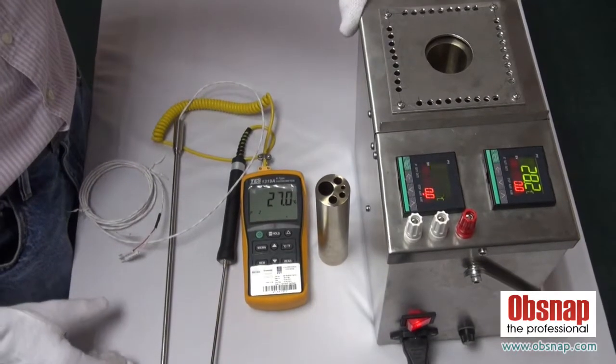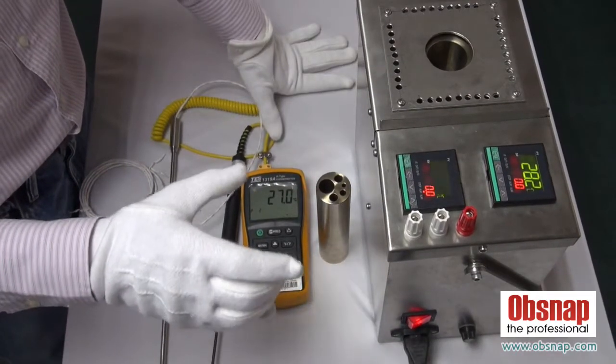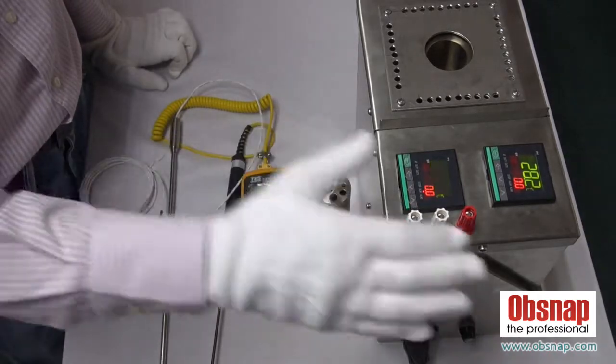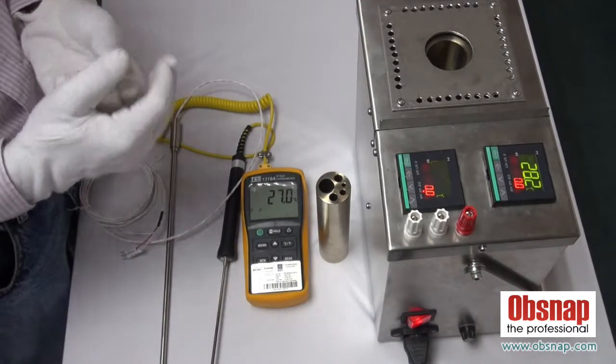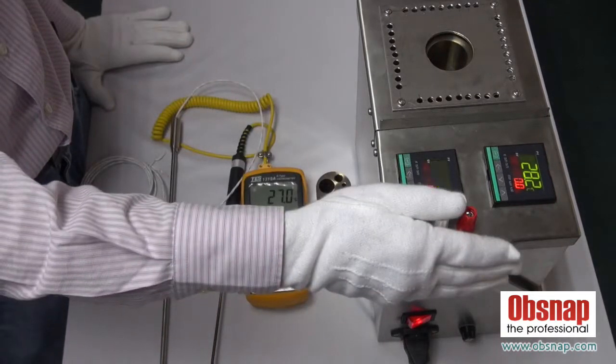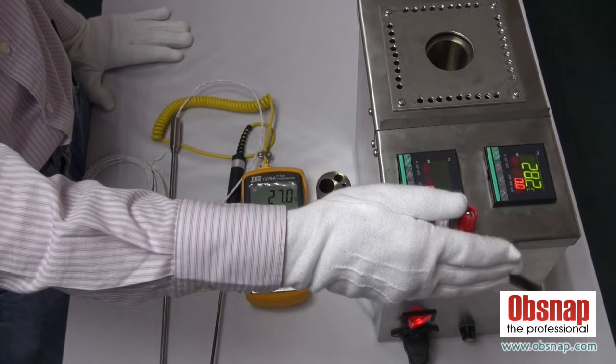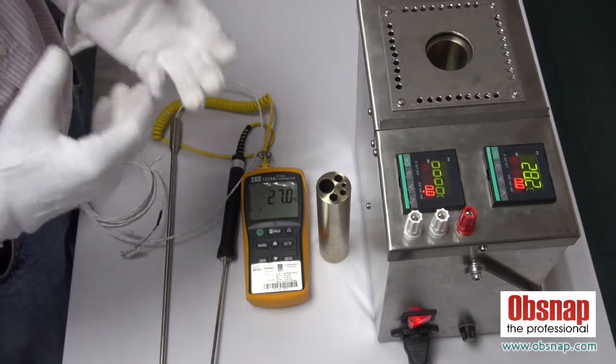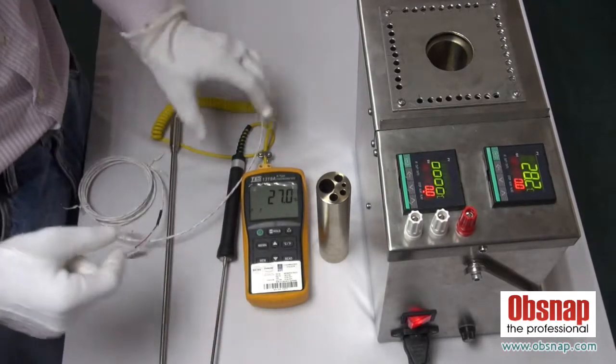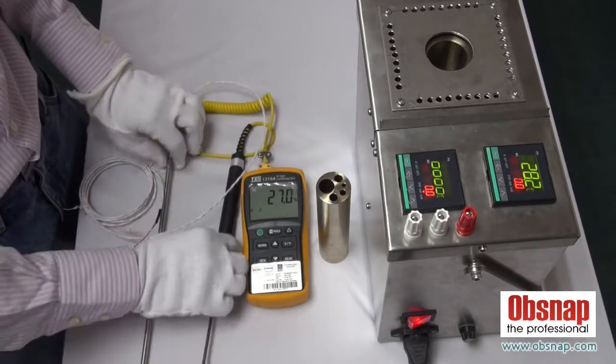Today I would like to show you the basic operation of the dry box, or some are calling this temperature block calibrator. The function of the dry box is mainly to produce heat to perform the calibration of the sensor.